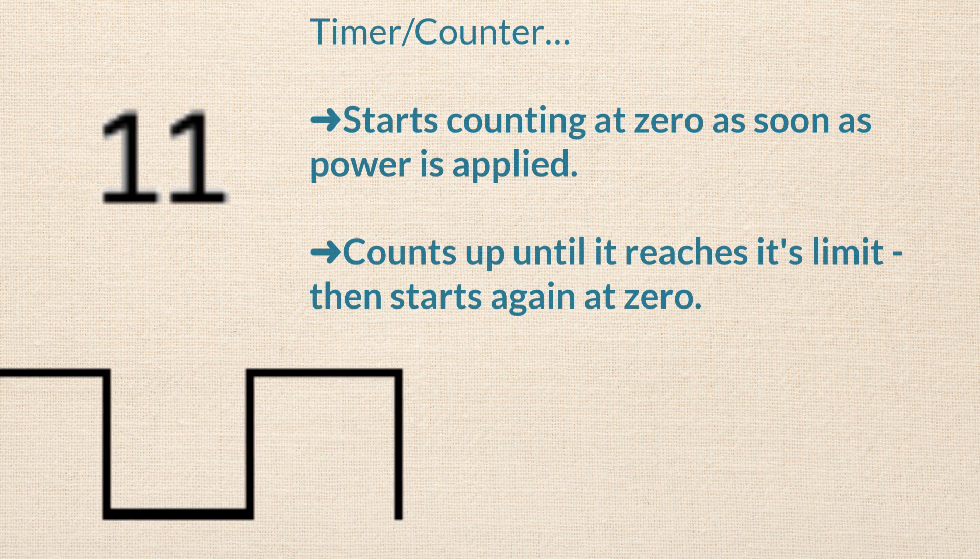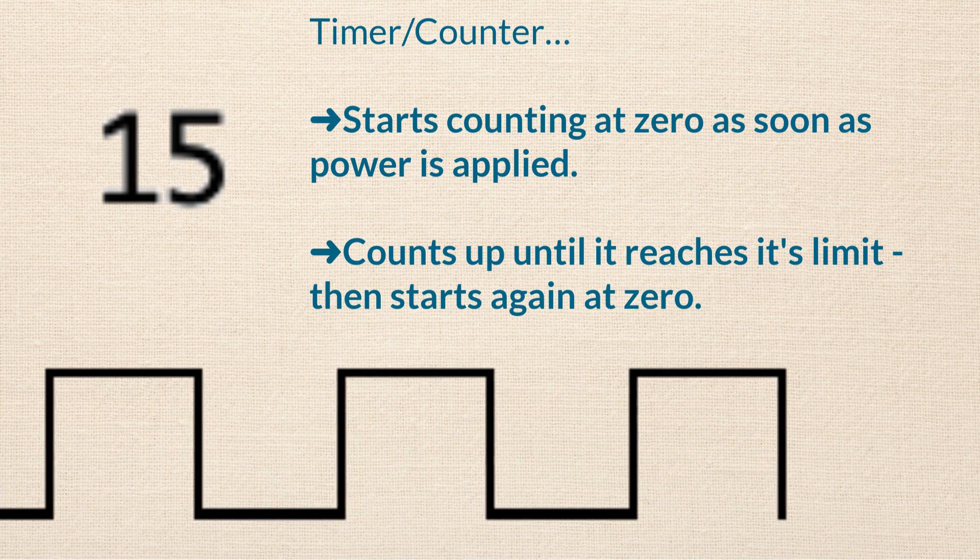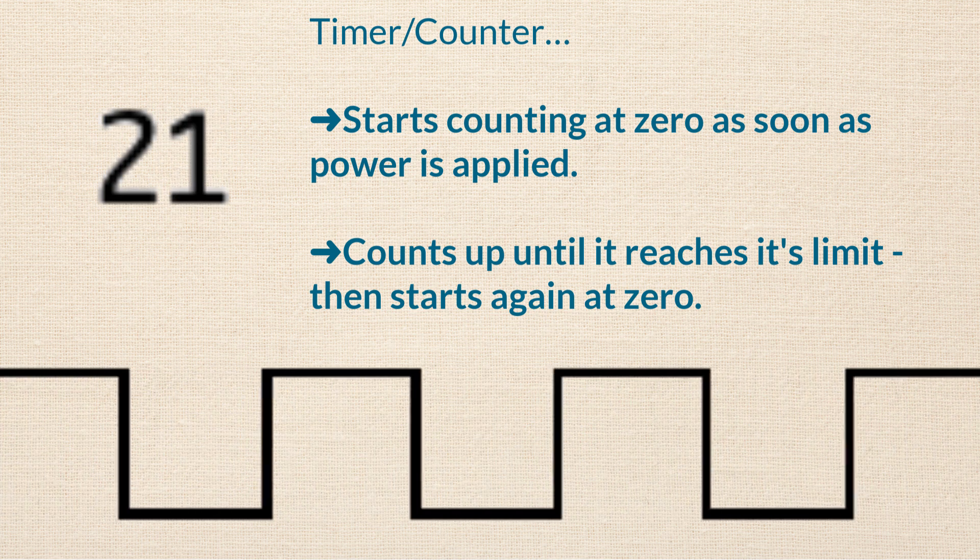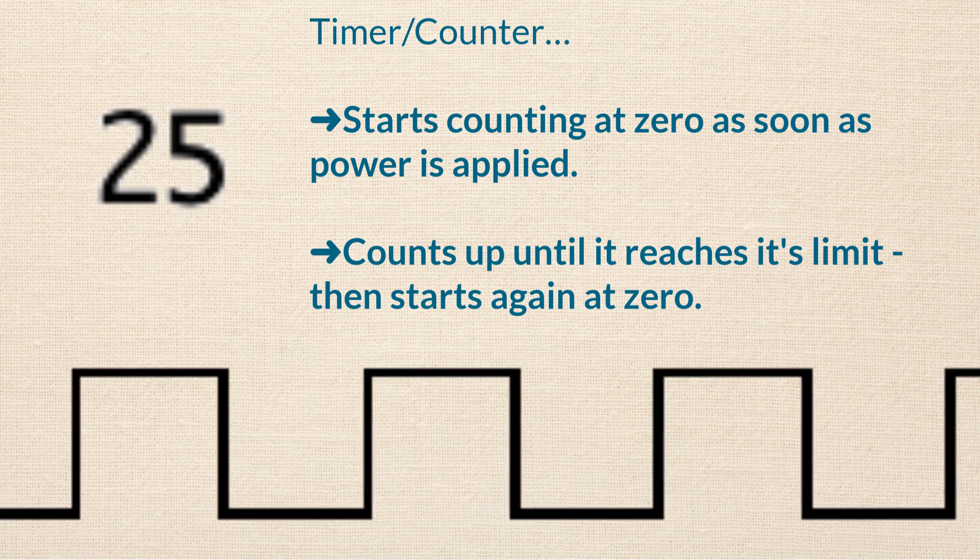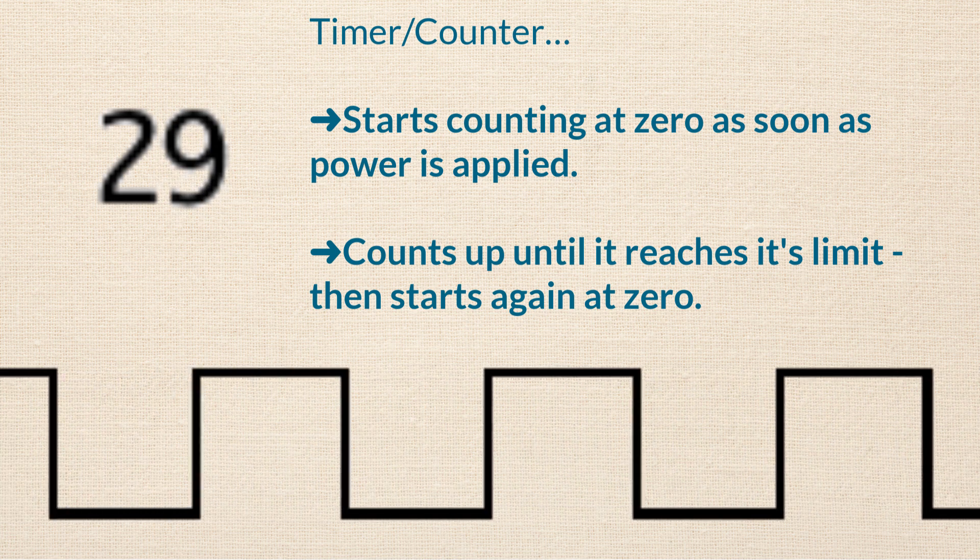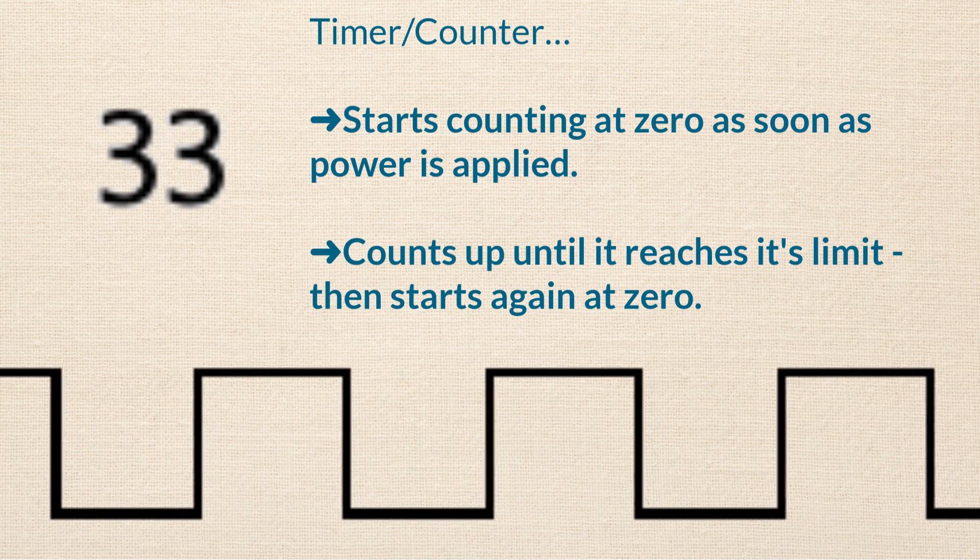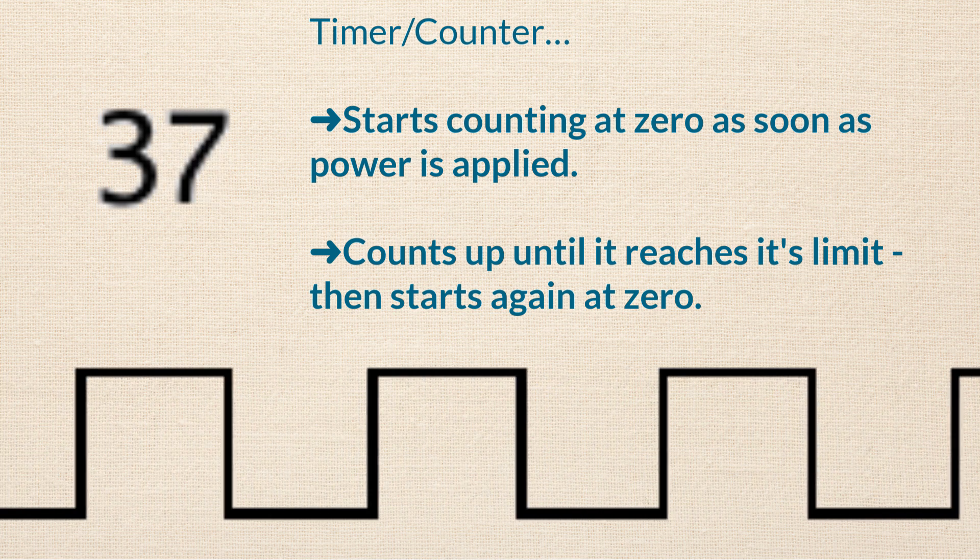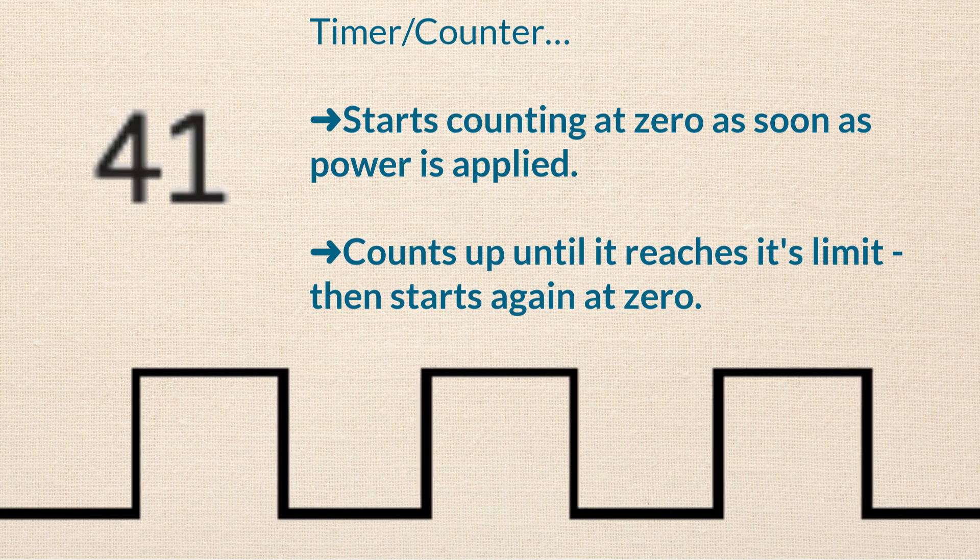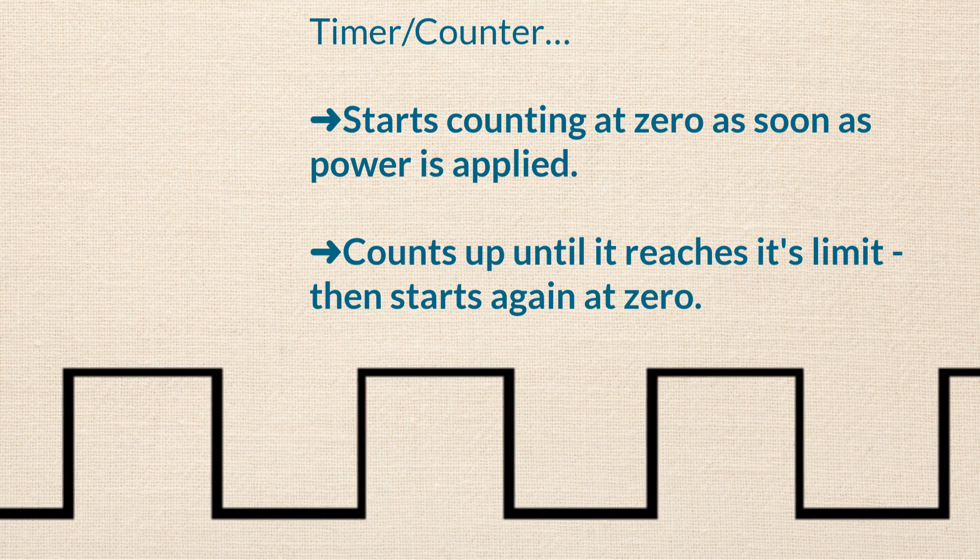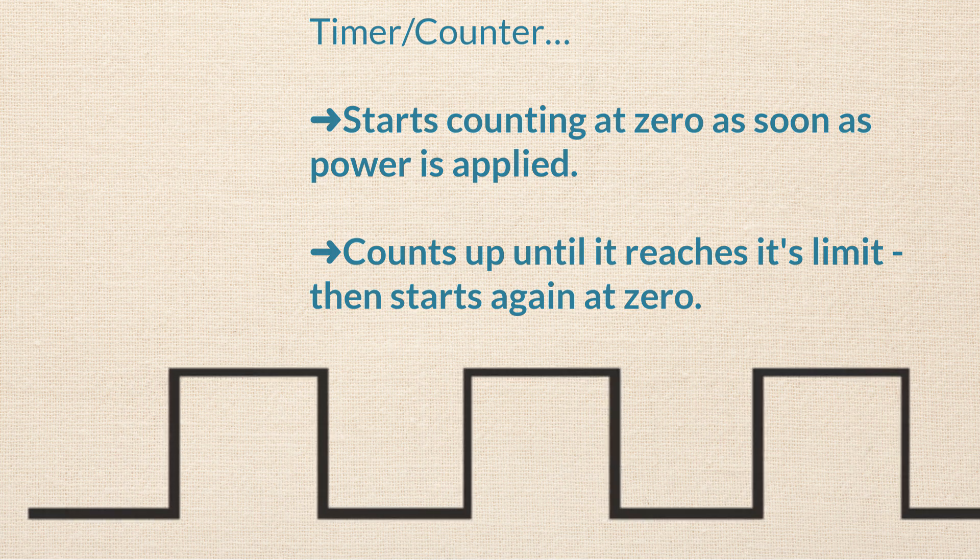A timer counter is able to count clock ticks. It starts counting as soon as power is applied to the Arduino and it doesn't stop. It's always counting and you don't even have to tell it to start in the sketch. It just goes and it starts counting at zero and it counts up until it gets to its maximum count and then it starts over and begins counting again at zero.